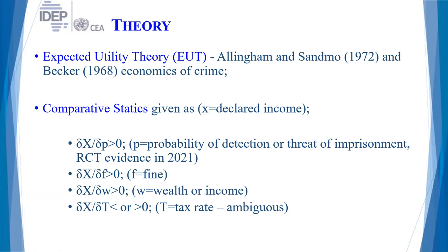The comparative statics highlights the following: the amount of income you declare increases if you feel you are going to be caught or sent to jail, and there is increasing experimental evidence supporting this result. The declared income is also a positive function of fines or penalties. It is also an increasing function of wealth. The relationship with tax rate is ambiguous — in circumstances with higher tax rates there can be high payment, but there is also high declaration in circumstances with lower taxes. The empirical evidence is very ambiguous, so we sign it in both inequalities.